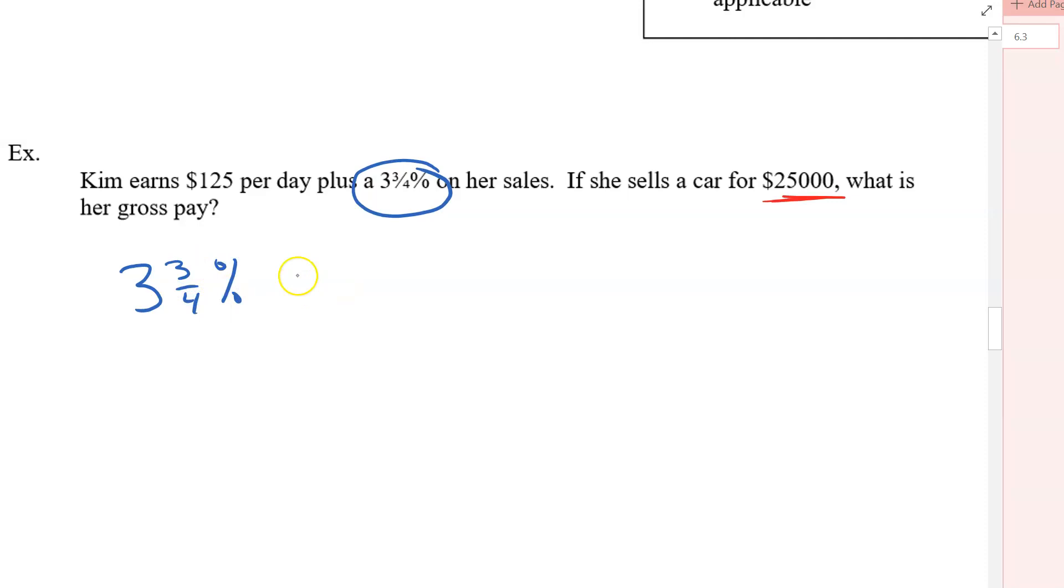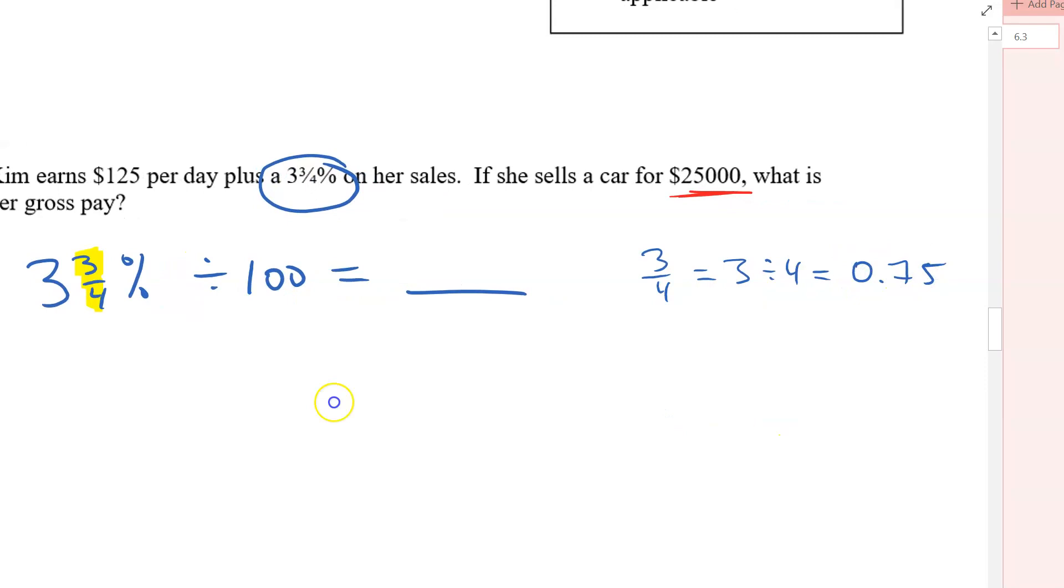So 3.75%. And we need to divide that by 100 to turn it into a decimal. So what are we going to do with the 3 quarters? Well, what you can do is, if you're just thinking about what does this fraction mean, you can say, well, that fraction, 3 quarters, you can do in your calculator, 3 divided by 4. And if you find that out, that is 0.75. So over here, we're going to get 3.75 divided by 100 to change it to a decimal. So we'll get 0.0375.